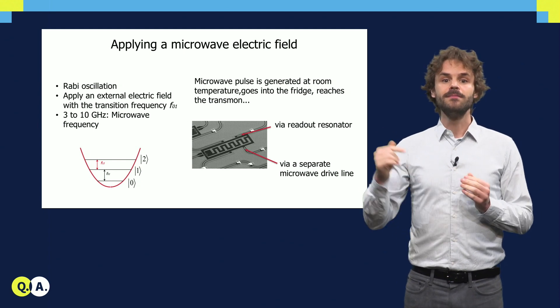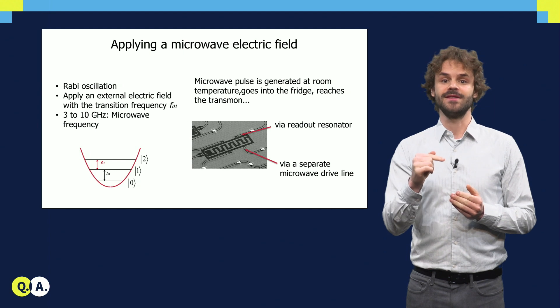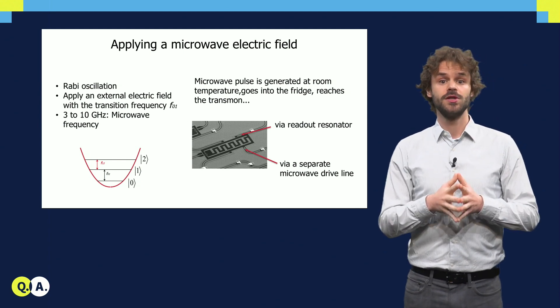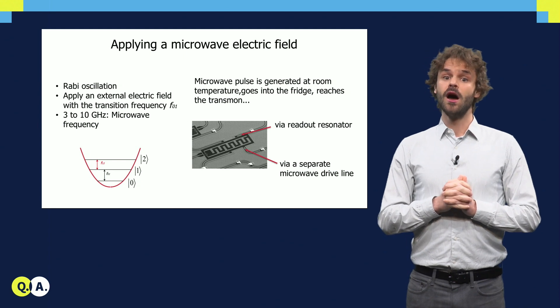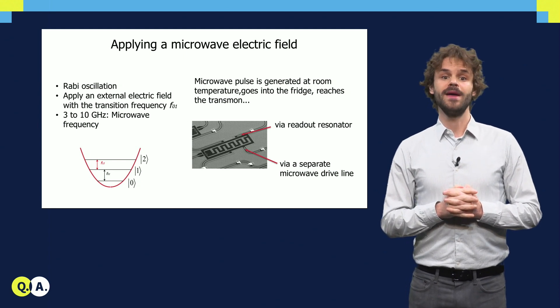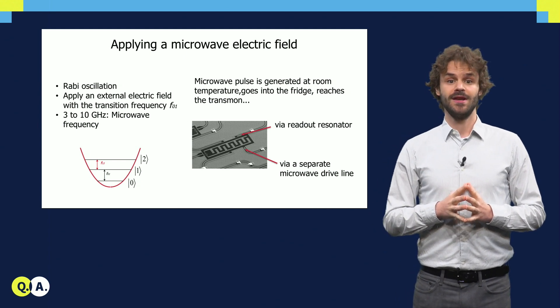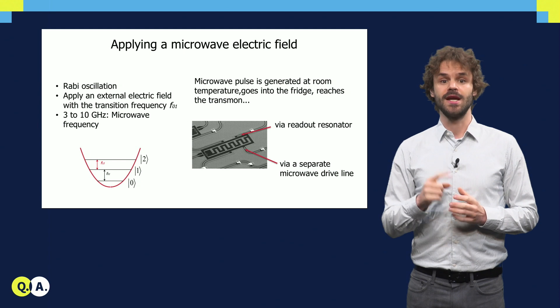To apply the electric field, we need a microwave line that ends next to the transmon. We can use the same line that is also used for measurements, about which you will hear more in the next videos. Or on larger devices with many qubits, we often make a dedicated drive line for each qubit. With this, we can generate the electric field close to only one selected qubit.